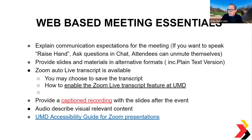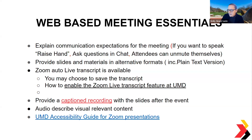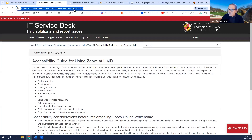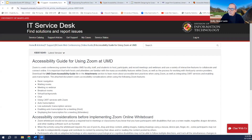Explain communication expectations for your meeting — using the raise hand feature, asking questions in the chat, and whether attendees can unmute themselves. Provide slides and materials in alternative formats including plain text versions. Zoom's auto live transcript is available, and you can choose to save the transcript — there are guides on how to enable the Zoom live transcript feature at UMD. Provide a captioned recording with slides after the event. Whenever we post a video on our website, we ensure captions are included and there's also a transcript — if you put up a video without captioning or a transcript, the website is not accessible. Also audio-describe any visually relevant content.